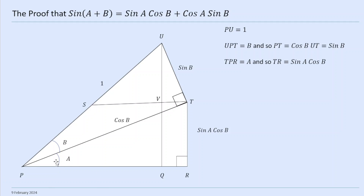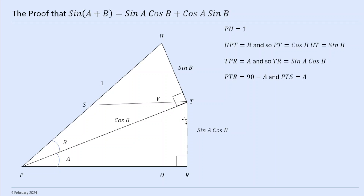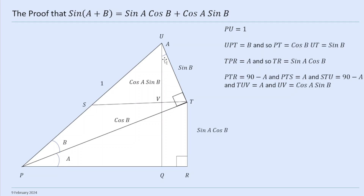This angle here is a, which means that because this is cos(b), this must be sin(a)cos(b) — which is a good thing to find. And this angle here is a, so PTR is 90 minus a, which means that PTS is a. This angle is going to be 90, which means that STU is 90 minus a, which means this angle up here is a.